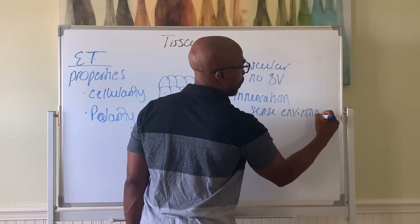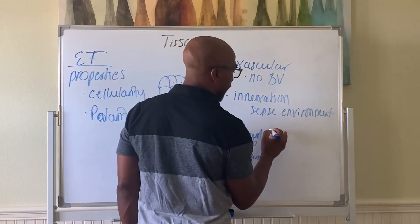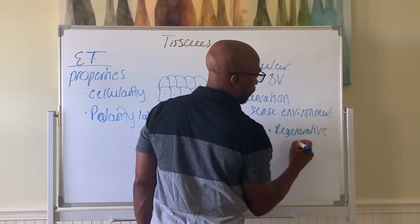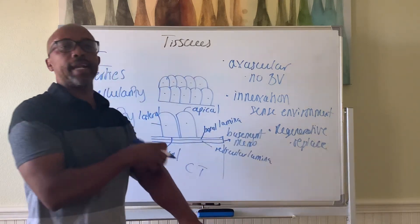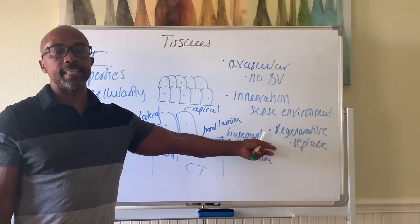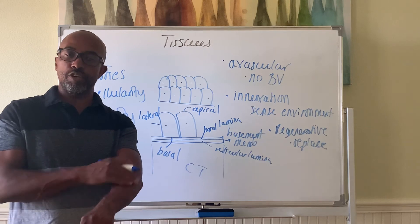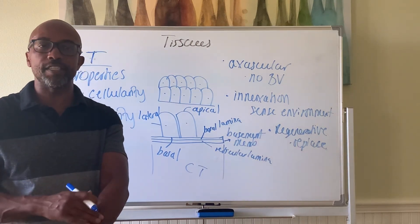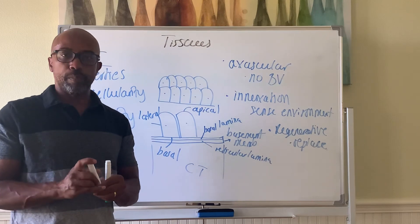Epithelial tissue is also highly regenerative, meaning these cells replace themselves very often. If you scratch yourself, the cell is quickly replaced by another — that's regeneration. This is a useful property at your surfaces because if something scratches you, you want it to be quickly repaired.